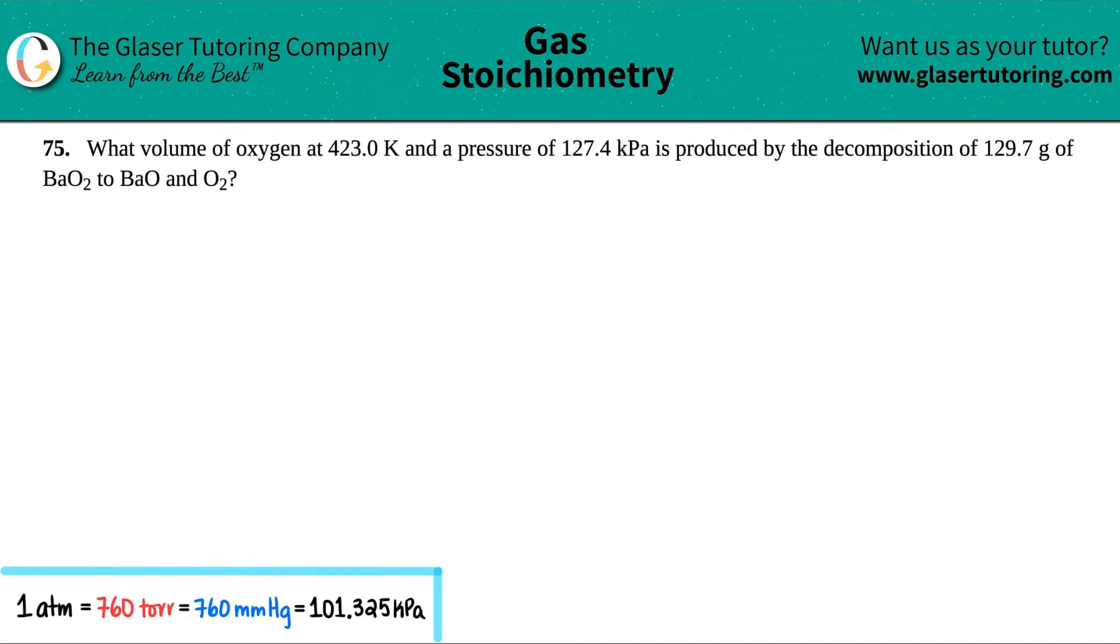Number 75. What volume of oxygen at 423.0 Kelvin and a pressure of 127.4 kilopascals is produced by the decomposition of 129.7 grams of BaO2 to BaO and O2? So remember, if they're asking you for a question about one thing and giving you numbers about another compound, chances are we need to write a balanced equation.